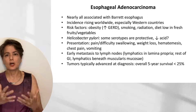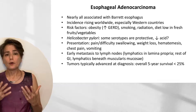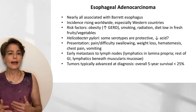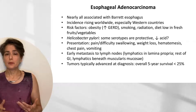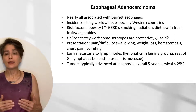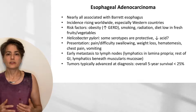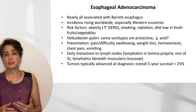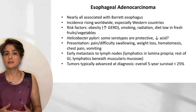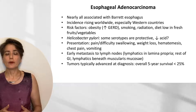Almost all cases of esophageal adenocarcinoma arise in a background of Barrett esophagus, and incidence is rising worldwide. It used to be that squamous cell carcinoma was much more common than esophageal adenocarcinoma, but those are now about equal, and in some regions adenocarcinoma surpasses squamous cell carcinoma. Risk factors include obesity — due to increased incidence of GERD — smoking, radiation, and diets low in fresh fruits and vegetables, perhaps due to antioxidants found in these foods.